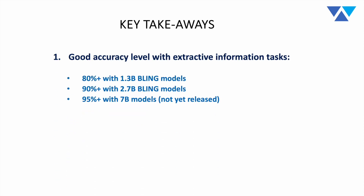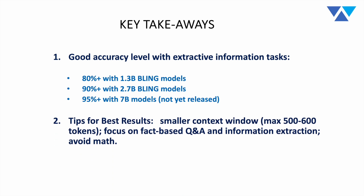Key takeaways: accuracy levels of 80%+ with 1.3 billion parameter models, 90% with 2.7 billion, and 95% with 7 billion — we think these are good, useful levels of accuracy, especially concentrated in extractive information tasks. To get the best results, keep a slightly smaller context window, focus on fact-based Q&A and information extraction, and avoid math. We also set the temperature lower at 0.3 — lower than typical guidance for larger models. Finally, what was really notable was the largely absent hallucinations. We did not find any behavior where the model created facts that did not exist.